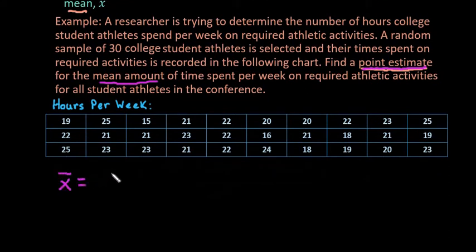So all I would do is just find x̄, so I would find the sum of all of my values. X is just the random variable that we use for hours per week, that's the variable that we use. And divide it by the sample size. So in this case our sample size would be 30.